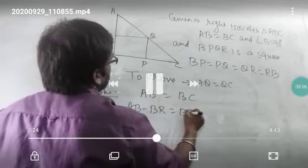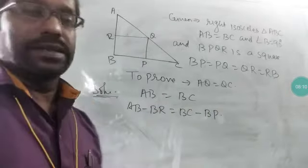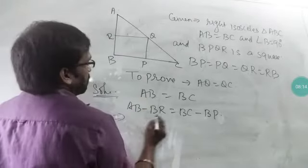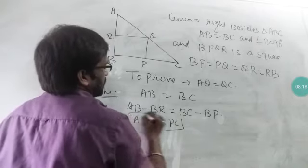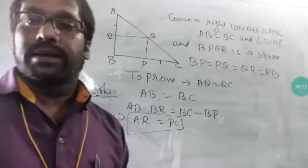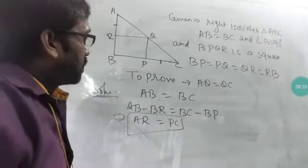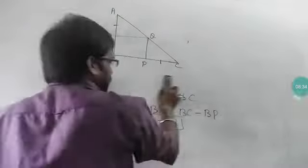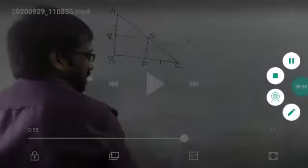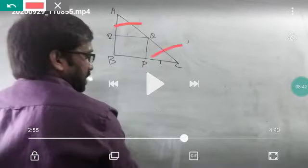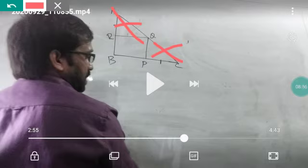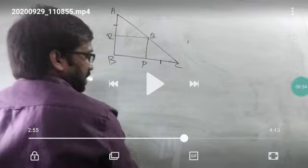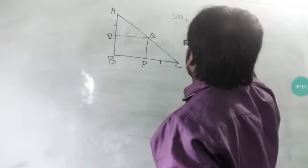Since AB = BC (isosceles triangle), and BR = BP (sides of the square), subtracting gives AR = PC — these two sides are equal. The key to this question is that if we can prove the two triangles are congruent, then the opposite sides will also be equal. So AR = PC is the first relation we have established.